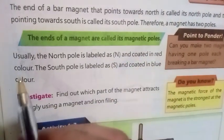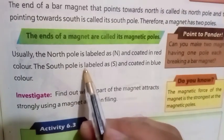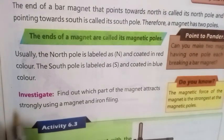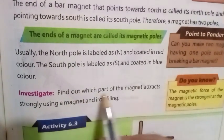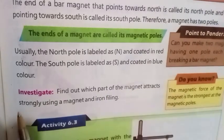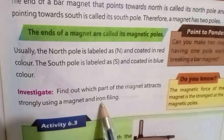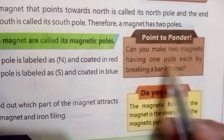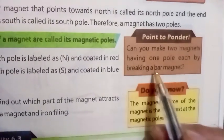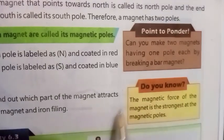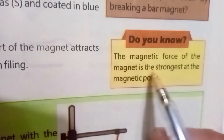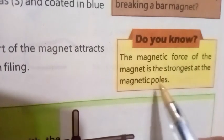Usually the north pole is labeled as N and coated in red color. The south pole is labeled as S and coated in blue color. Investigate: Find out which part of the magnet attracts most strongly using a magnet and iron filings. Point to ponder: Can you make two magnets having one pole each by breaking a bar magnet? Do you know the magnetic force of a magnet is strongest at the magnetic poles?